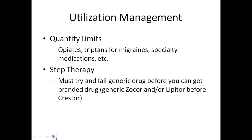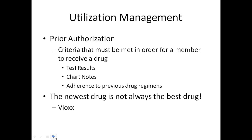Quantity limits also apply to specialty meds, for obvious reasons of cost. Then there's step therapy — you have to try and fail the cheaper generic before you can get the expensive branded drug. A classic example is requiring a patient to try and fail generic Zocor or Lipitor before getting Crestor. Another part of utilization management is prior authorization — criteria that must be met in order for a member to receive the drug. Community pharmacists are very familiar with this.